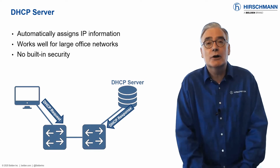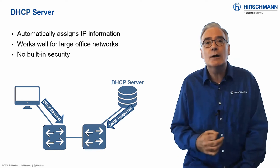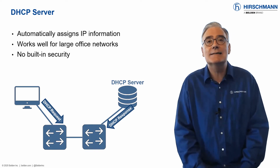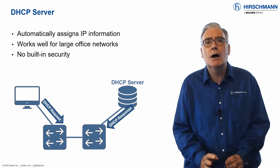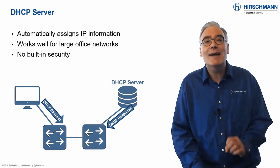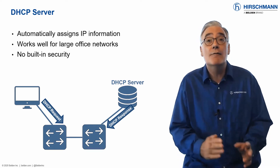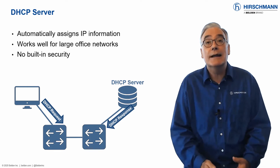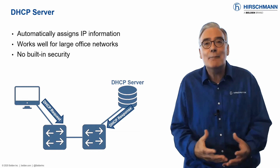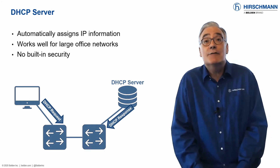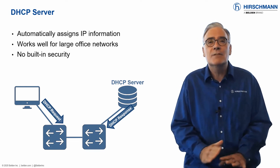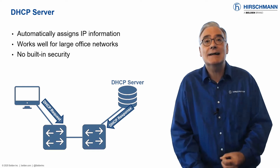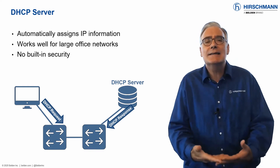Dynamic Host Configuration Protocol, known as DHCP, is a network protocol used to provide IP addresses and other configuration parameters to end devices. If you attach your computer to a network in the office or at home, there's a very high chance that it will get its IP address via DHCP. In the past, DHCP was not commonly used on industrial networks, but as these networks get bigger, DHCP becomes an attractive option for simplified deployment. DHCP was never designed to be secure, and it forms the basis for many network attacks. If you use DHCP, you need to take some precautions.